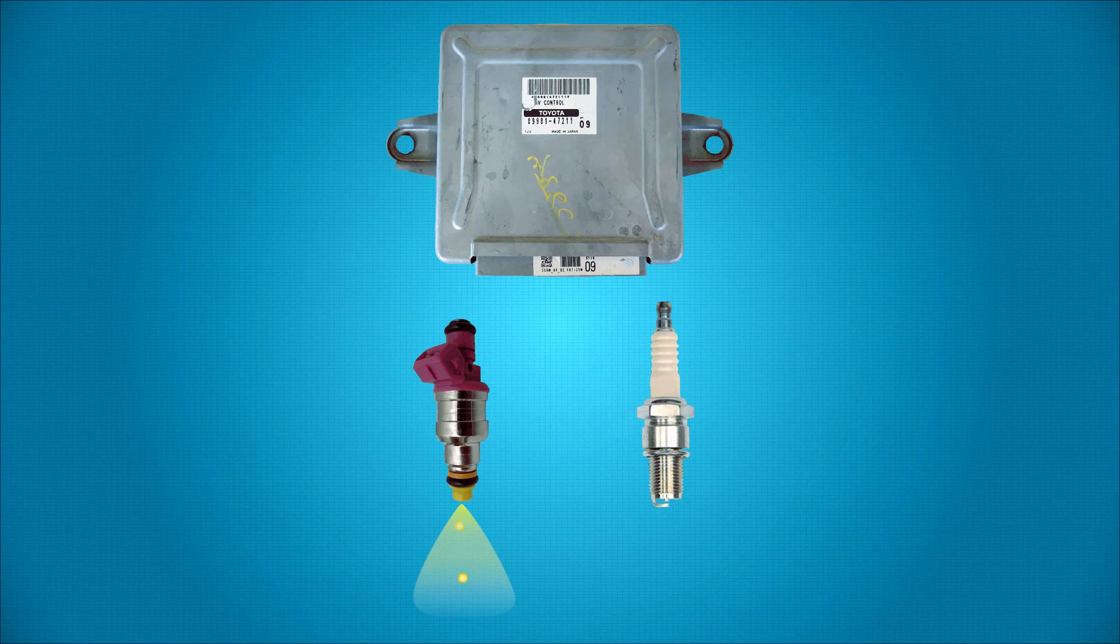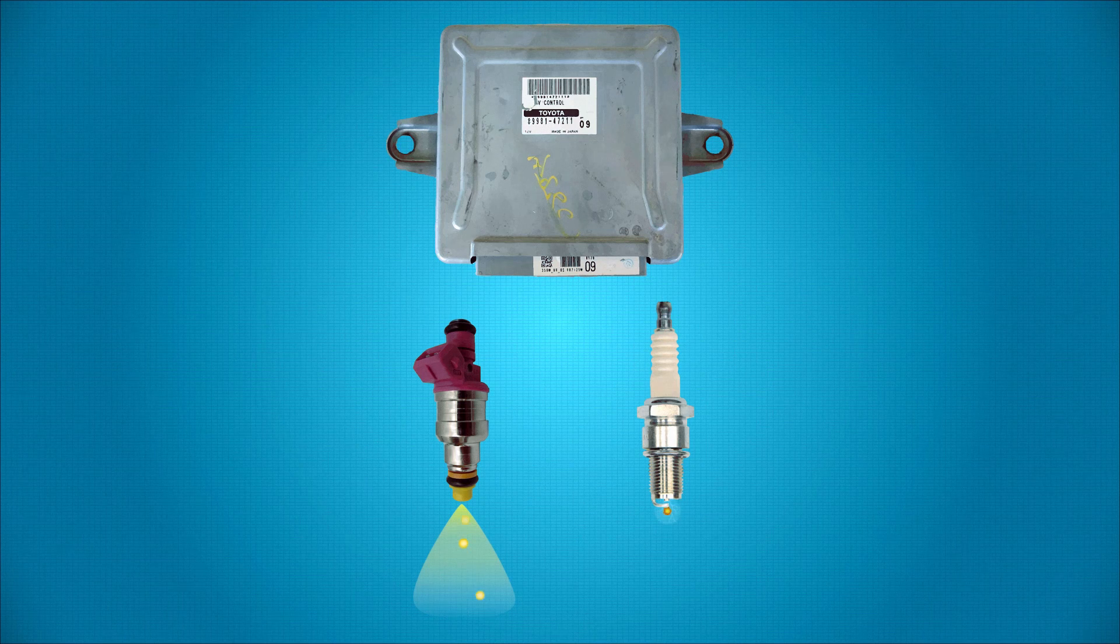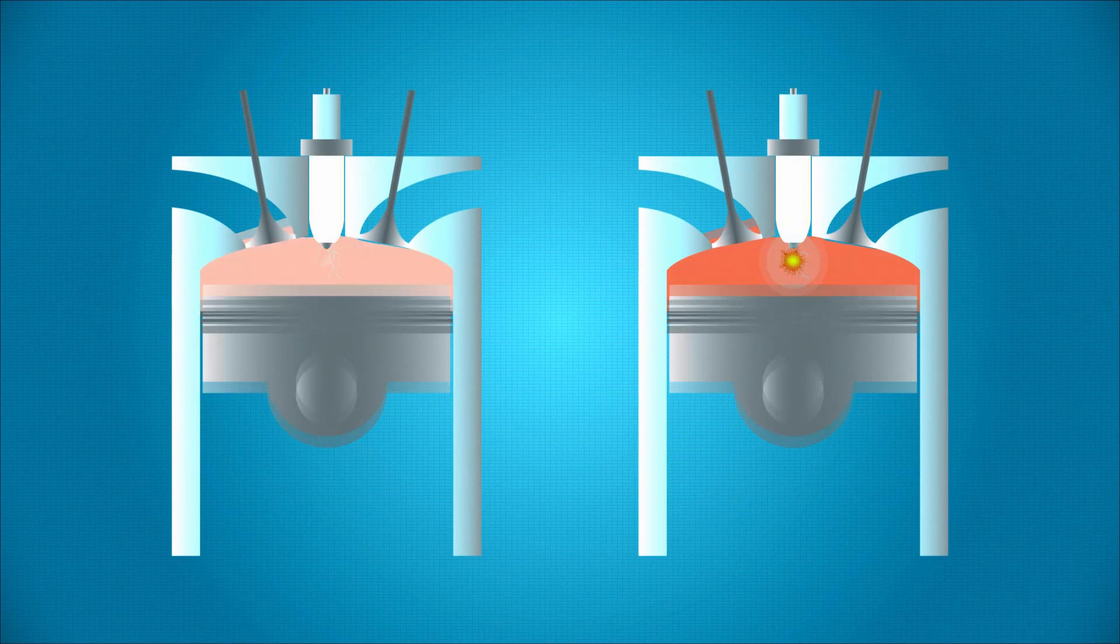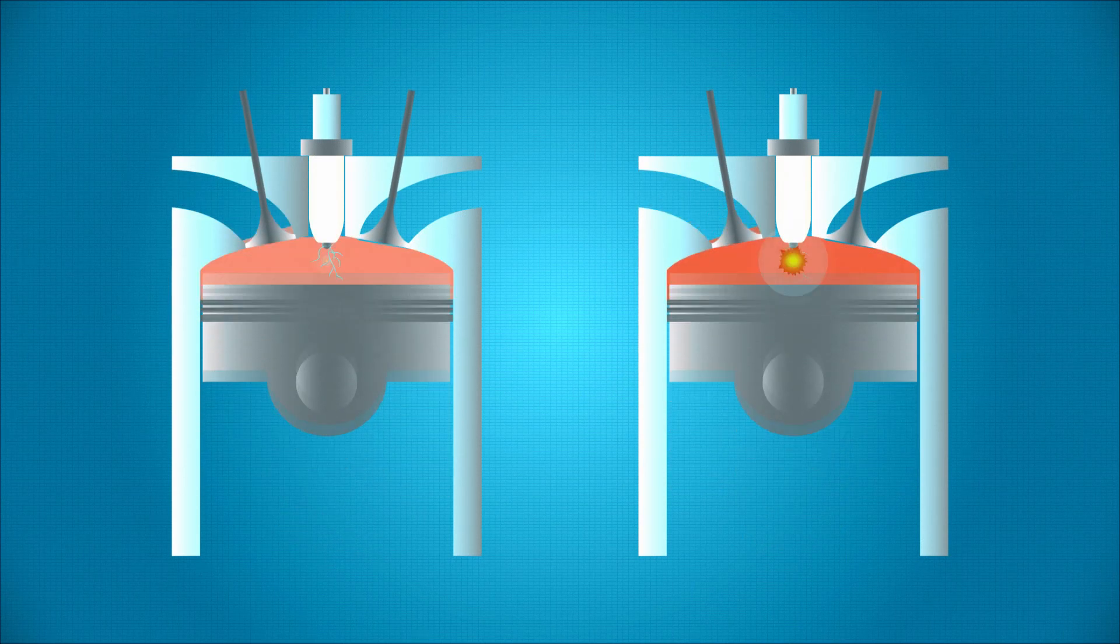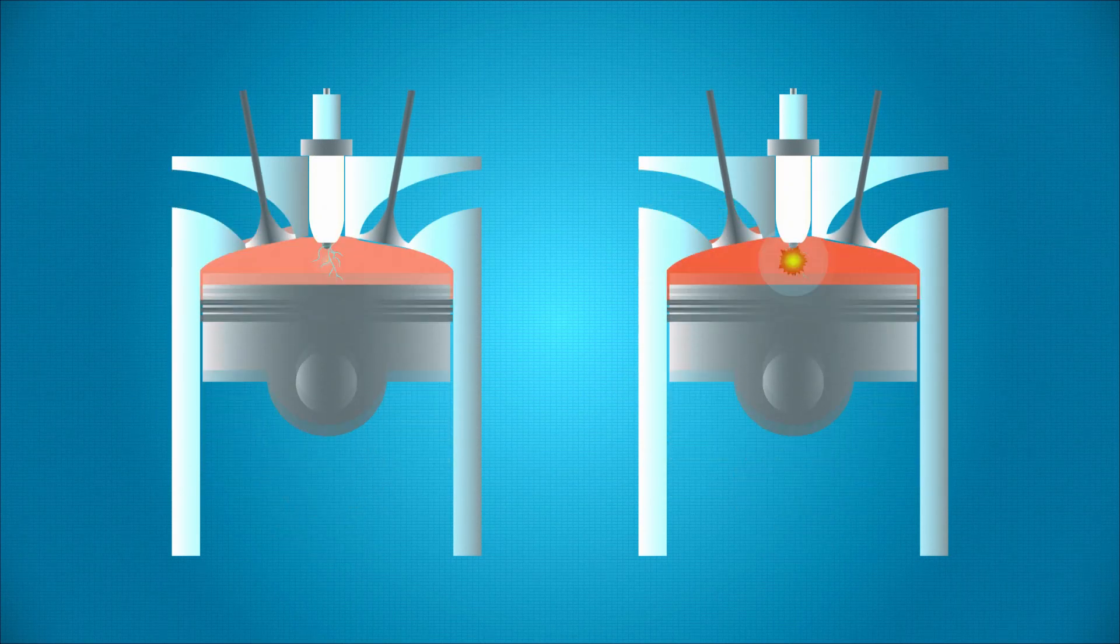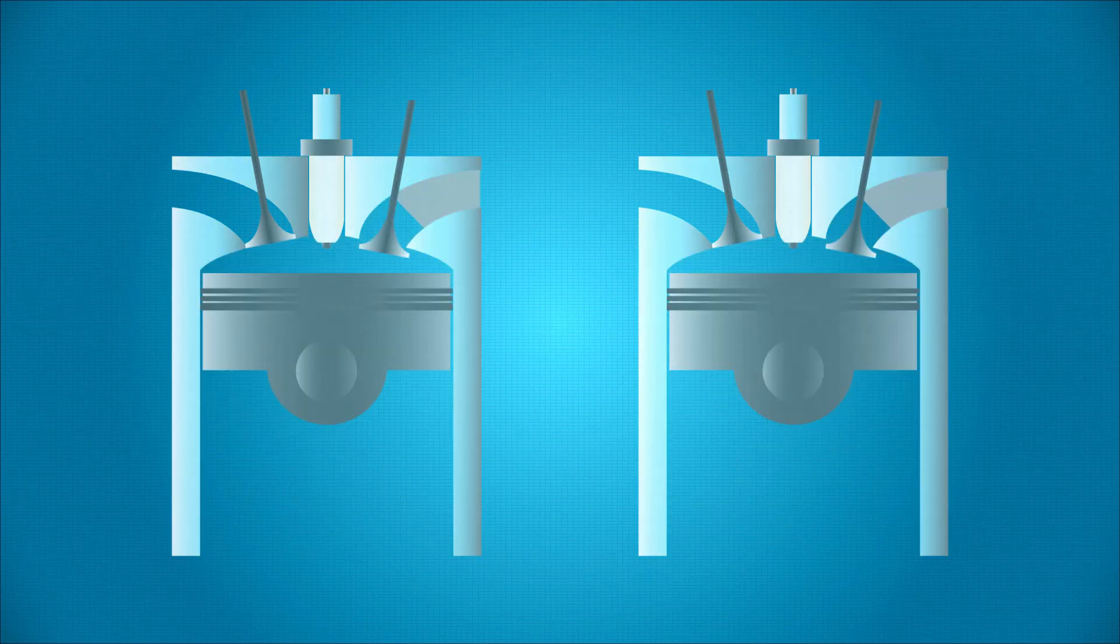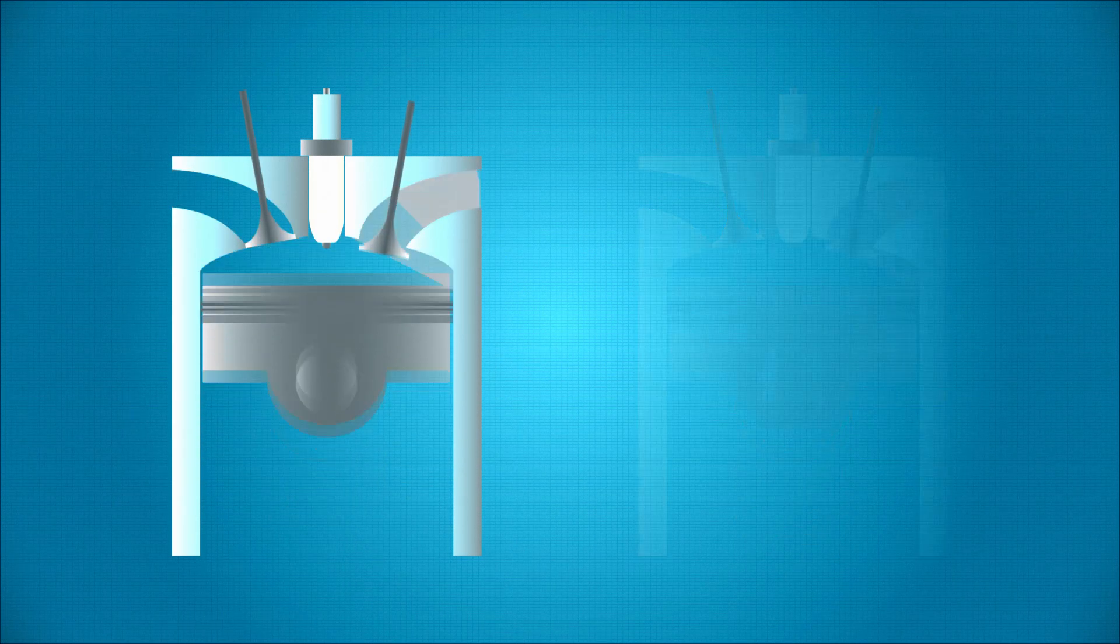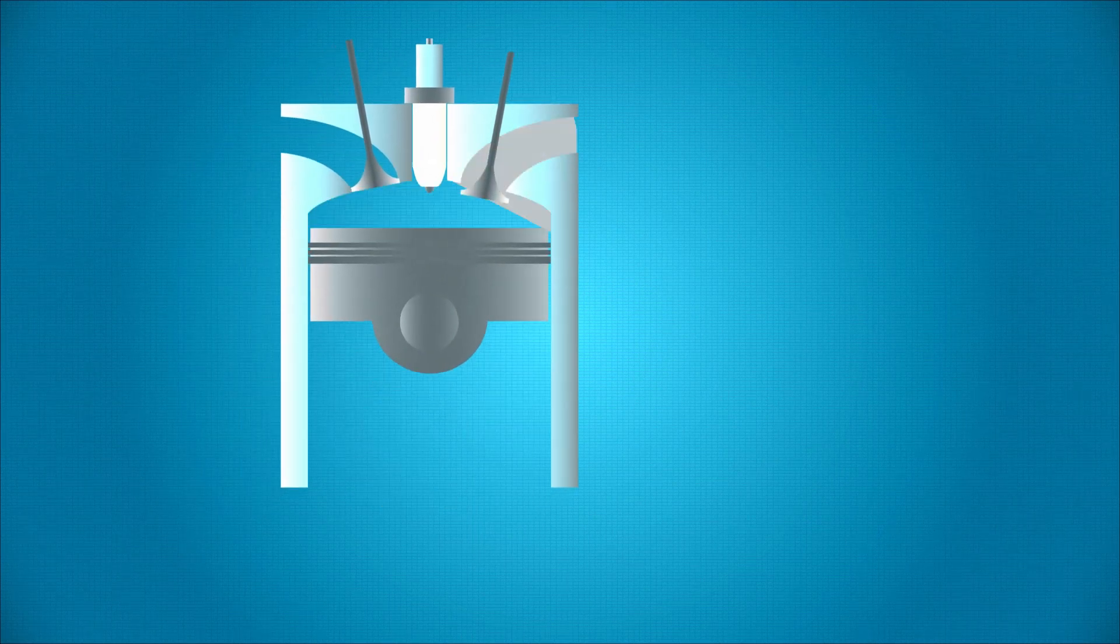Creating a spark earlier in the cycle or advancing the timing can produce more power by starting combustion sooner, which allows more pressure to be produced in combustion, but at the risk of detonation. With an ECU in control of the ignition system, advancing ignition timing when conditions allow for it now becomes achievable.